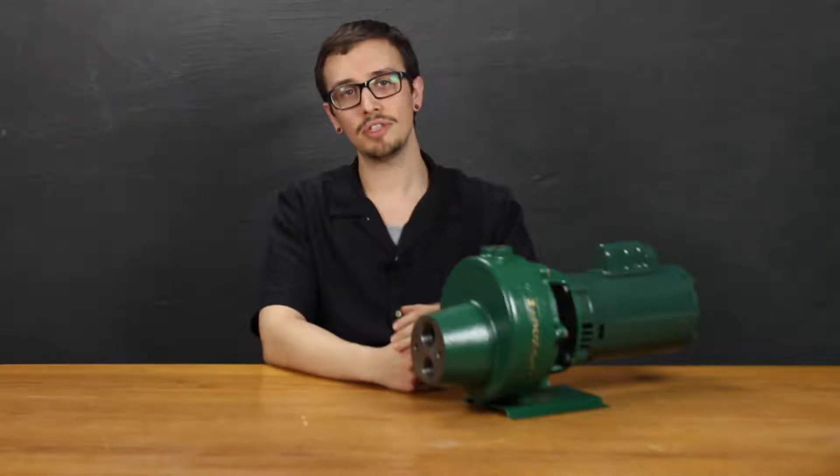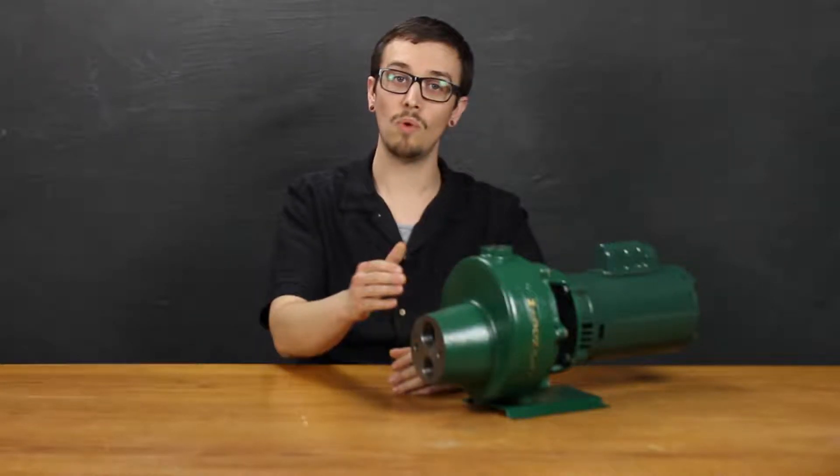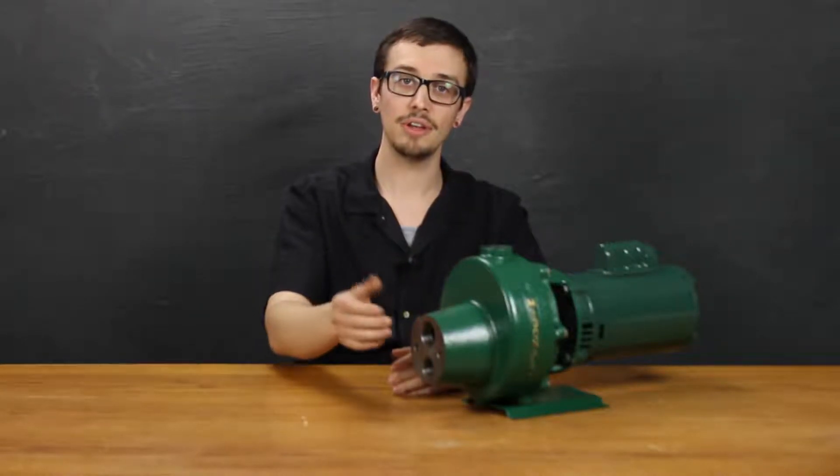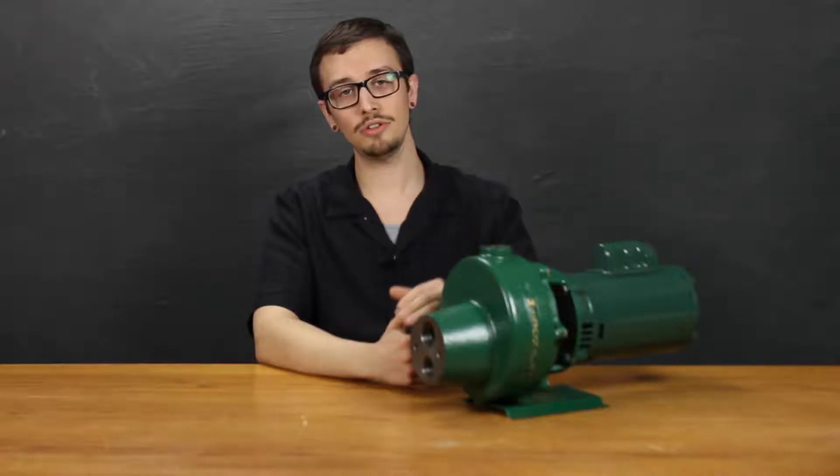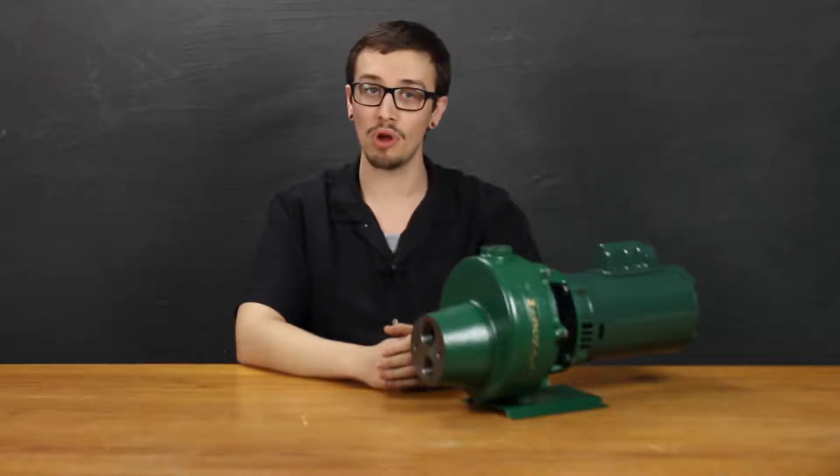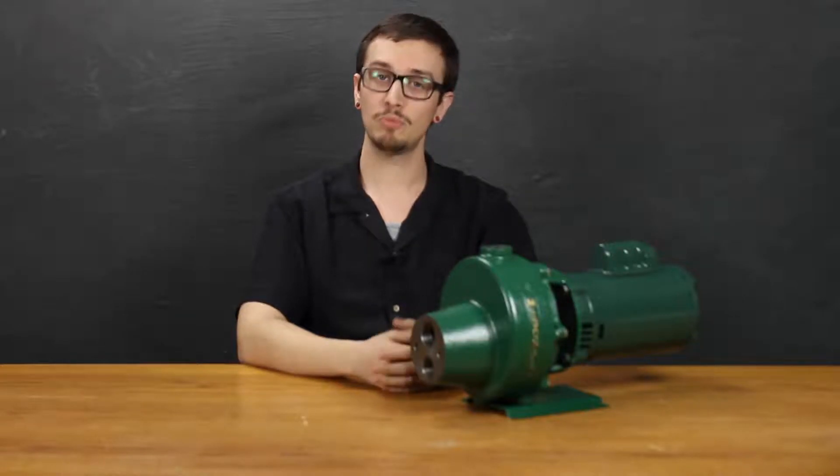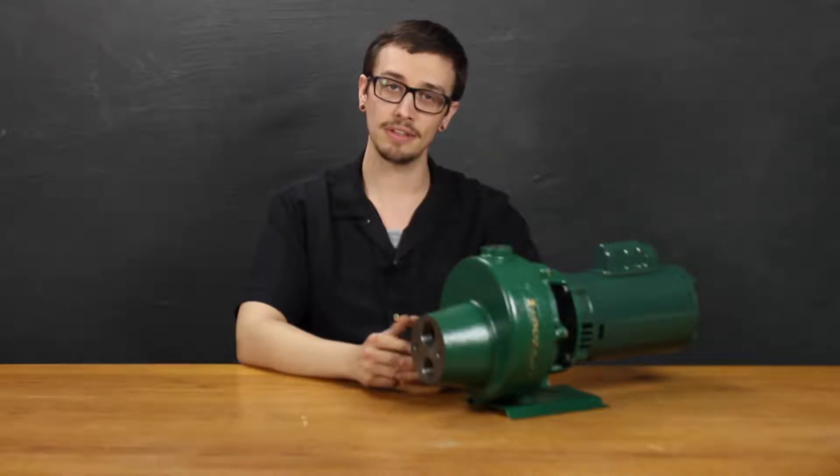The 1500 series multi-stage jet pumps come with a standard one and a quarter inch suction and a one inch discharge. The 1500 series is available in either a dynamically balanced bronze or an engineered thermoplastic impeller, which provides versatility of the installation.